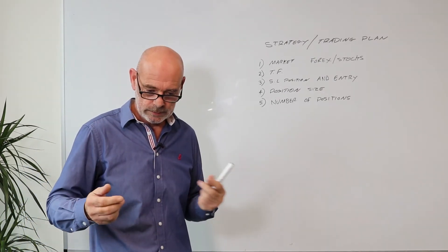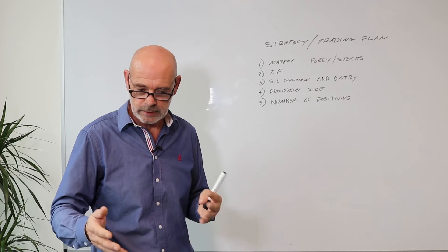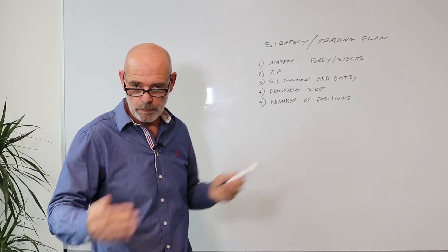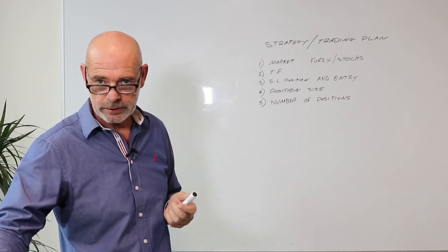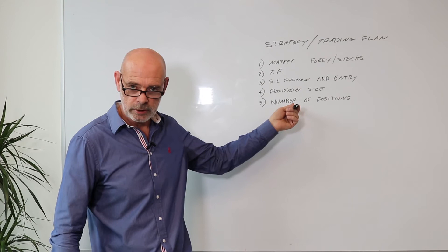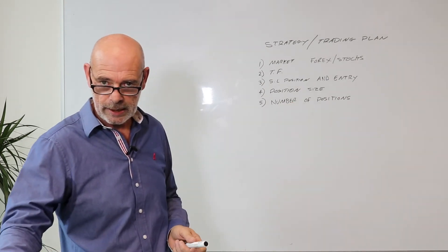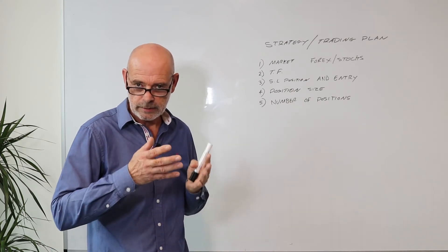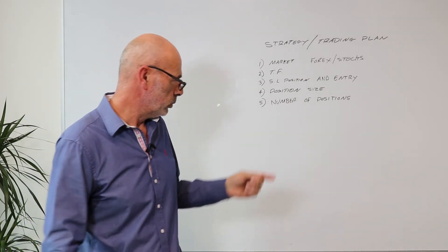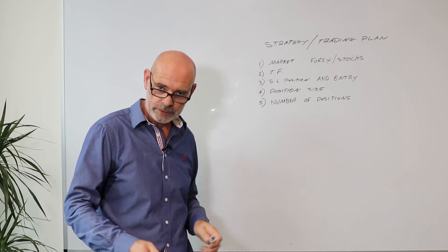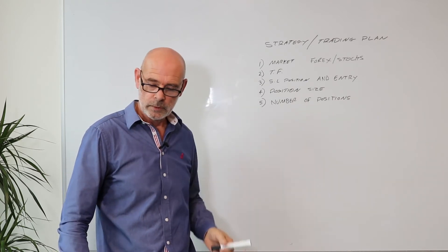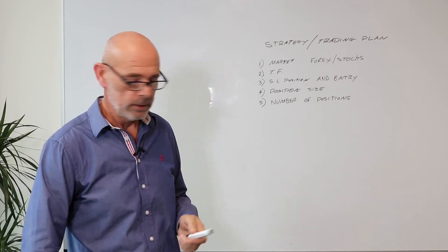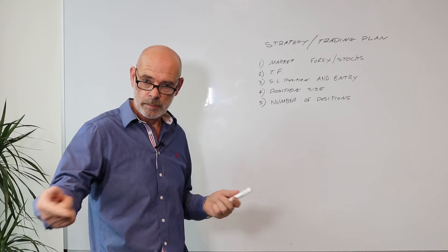You can start to complicate it as well. You can add to it with stuff like number of positions. Do you want to put one position on and take one position off when it hits target? Do you want to put two or three positions on? Do you want to scale in, scale out? Position size again is going to be subjective. Do you want small positions but a number of them, or do you want one big position that you're just going to get out of at the end? Do you want one position and then scale out of that one position?